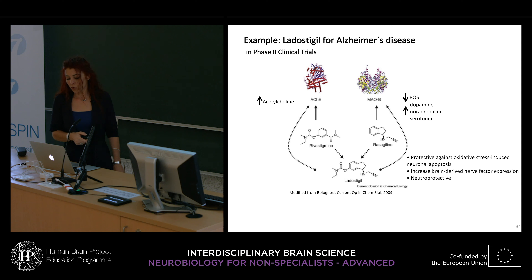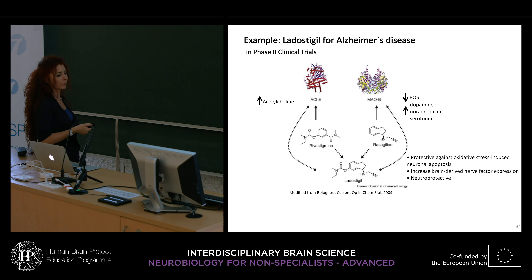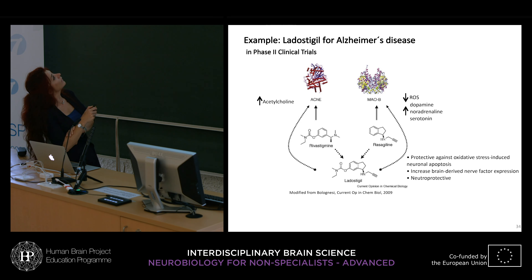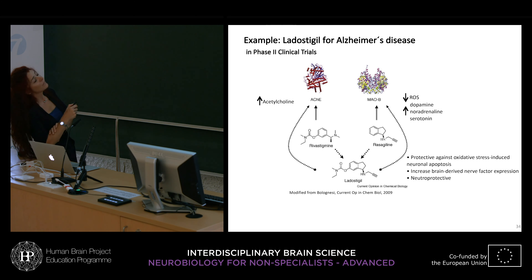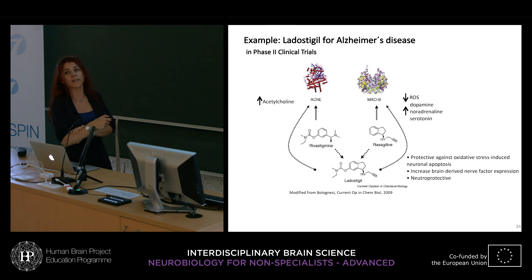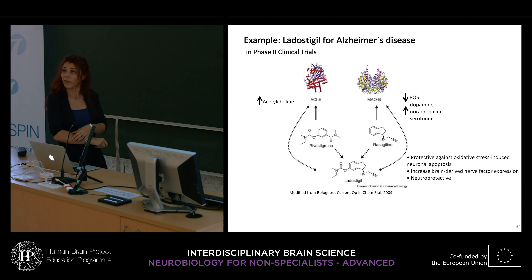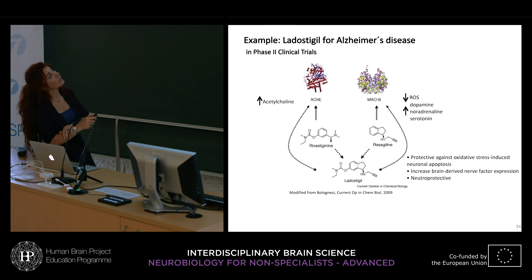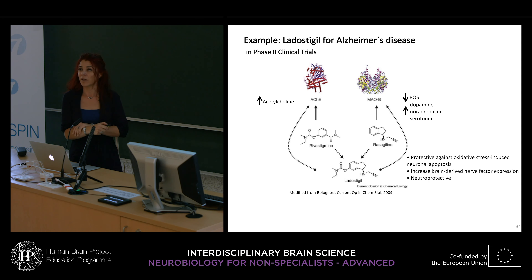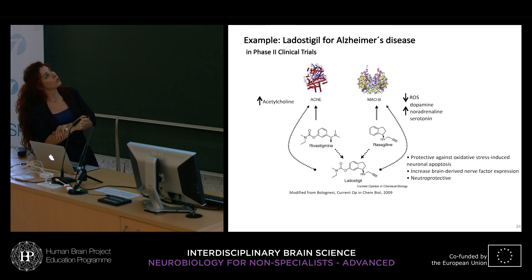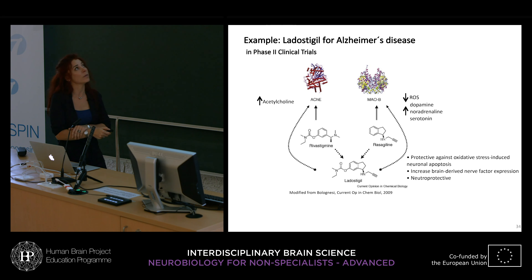As a concluding example: ladostigil for Alzheimer's disease is one of these multi-target drugs. It is a composite of rasagiline and rivastigmine. Rivastigmine is an inhibitor of acetylcholinesterase, increasing acetylcholine concentration. Rasagiline is an inhibitor of monoamine oxidase B, decreasing reactive oxygen species concentration and increasing dopamine, adrenaline, and serotonin concentrations. This composite molecule presents very good activity and is very promising.